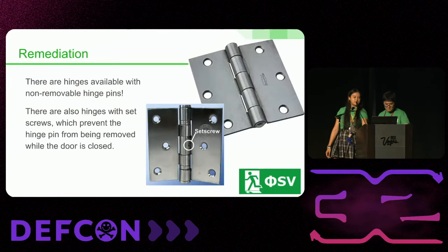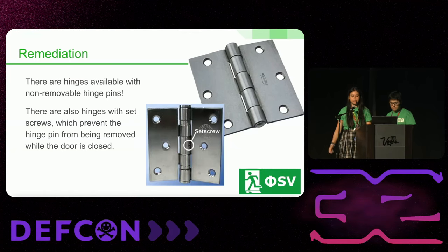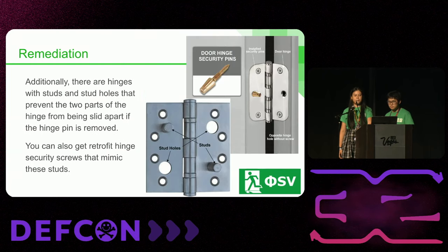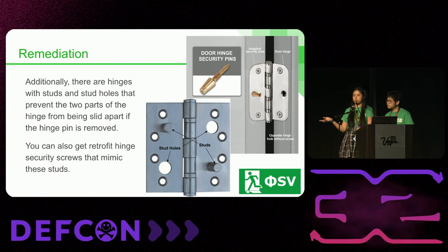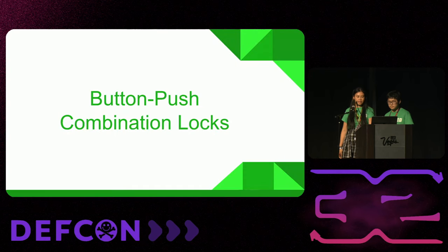Next is removing the hinges. Usually you can take out those little hinge pins and pull the door off the frame. There are special security hinges, such as set screw hinges and stud hinges, that allow you to lock that door so that even if the hinge pin is taken out, you can't actually remove the door from the frame.